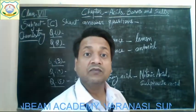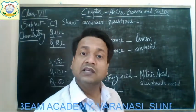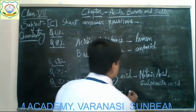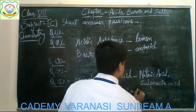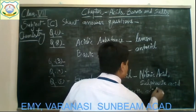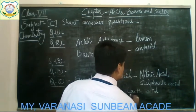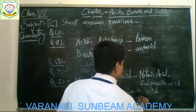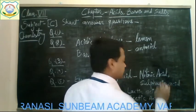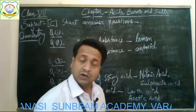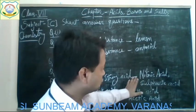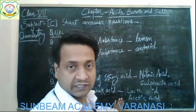The naturally occurring acids are weak acids. Examples of weak acids are lactic acid and acetic acid. These are two examples each of strong and weak acids.